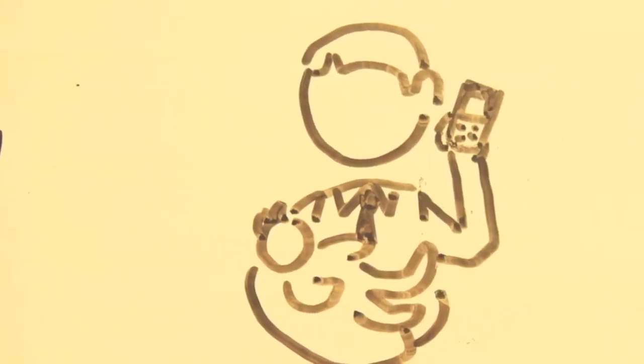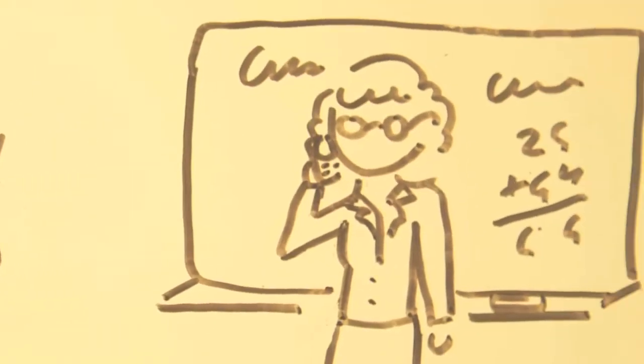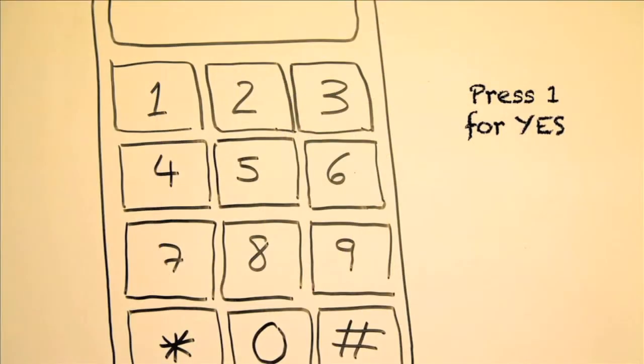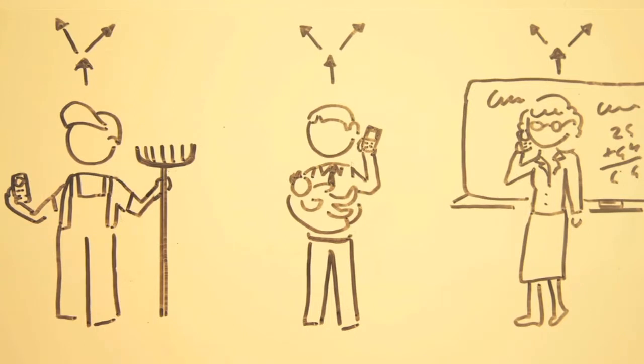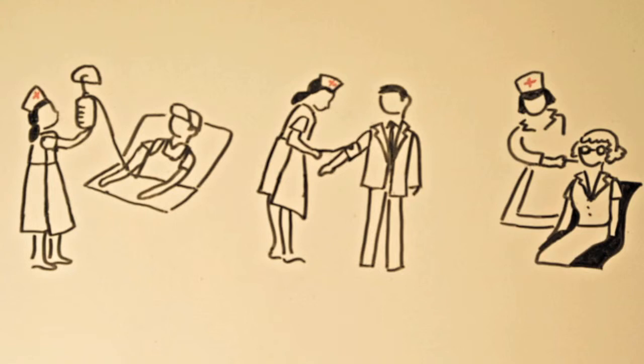Health workers encourage people to call the hotline set up with Verboice. Based on the caller's keypad responses, callers will hear tailored information in their local language on how to avoid becoming sick or how to get care if they are showing symptoms. The hotline helps people stay informed and healthy.